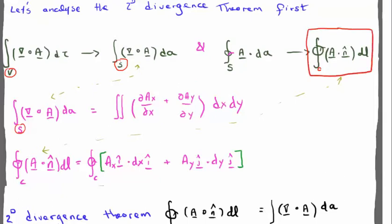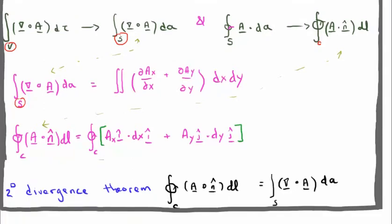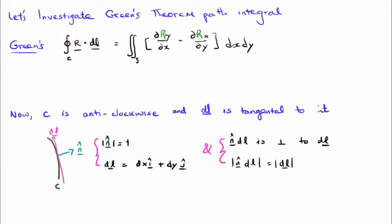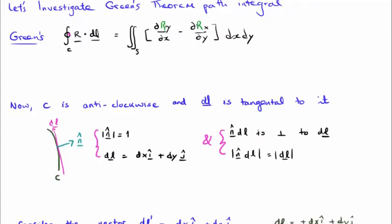Putting this all together, we can suggest that the two-dimensional divergence theorem is none other than the closed line integral of A dot n̂ dl, which is equal to the surface integral of the divergence of A. Is this Green's theorem? It certainly doesn't really look like it just yet. Let's investigate Green's theorem path integral. Green's theorem is written at the top of your screen. As I said at the start, C is anti-clockwise, and dl of course has to be tangential to it — that's the definition of dl.